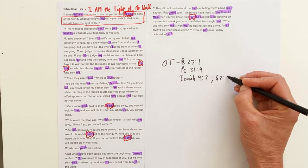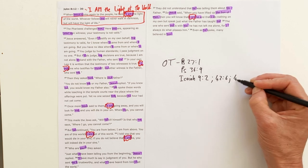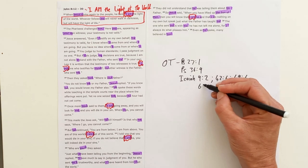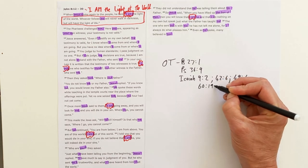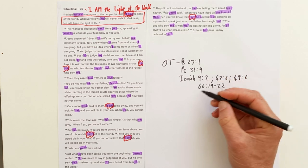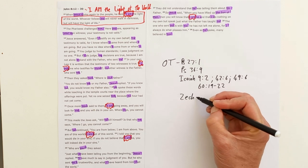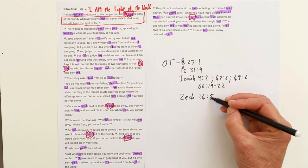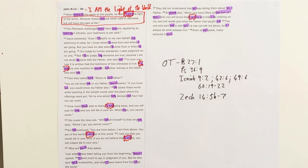Isaiah 42 verse 6, 49 verse 6. A key one, Isaiah 60 verse 19 to 22. You can look at Zechariah 14 verse 5, the second half of verse 5 to verse 7.